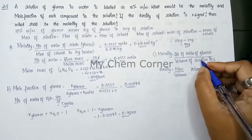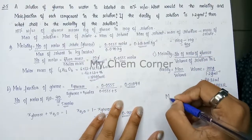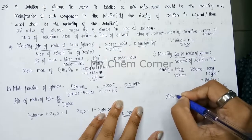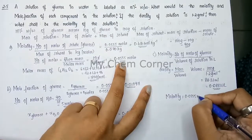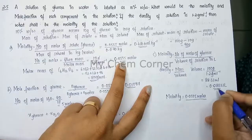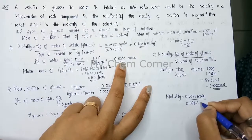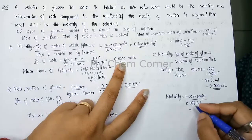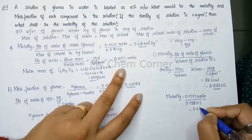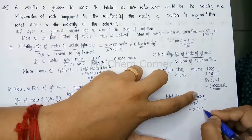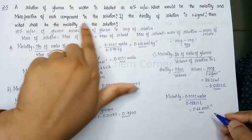Now we have everything. Substituting into the molarity formula: 0.0555 moles ÷ 0.0833 liters = 0.66 mol/L. That answers the third question — the molarity of the solution is 0.66 mol/L.